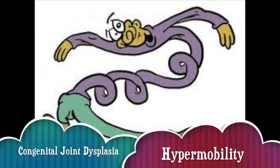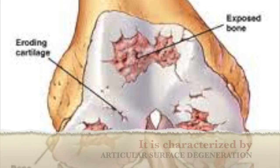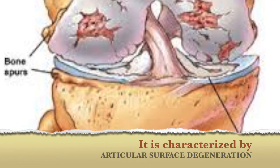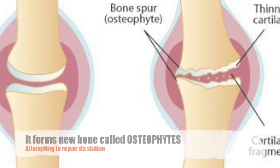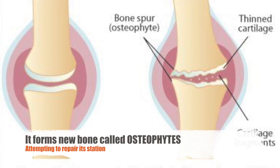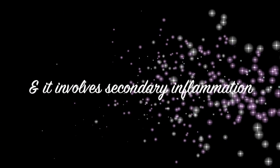Congenital dysplasia and hypermobility. Osteoarthritis is a disorder of synovial joints affecting our nation. It is characterized by articular surface degeneration. It forms new bone called osteophytes, attempting to repair its station, and it involves secondary inflammation.